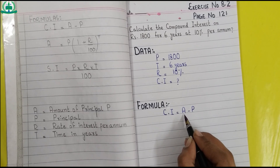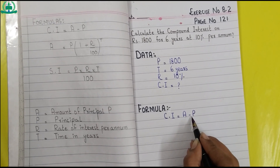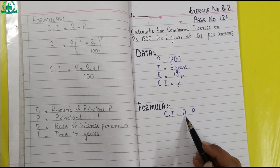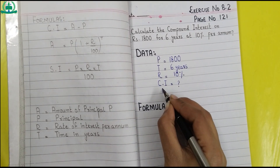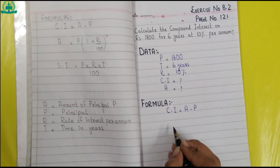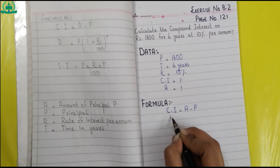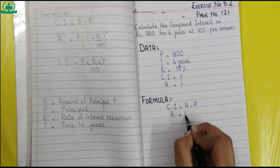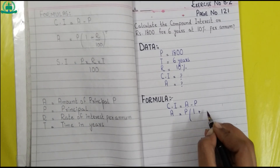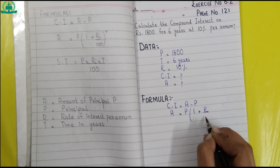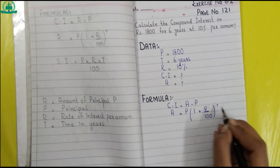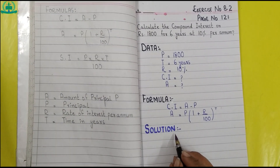To find compound interest we need to check if amount is given or not. In this question, principal is given but amount is not given, so in data we write amount equals question mark. The formula of amount is: amount equals principal multiplied by (1 + r over 100) raised to power t.